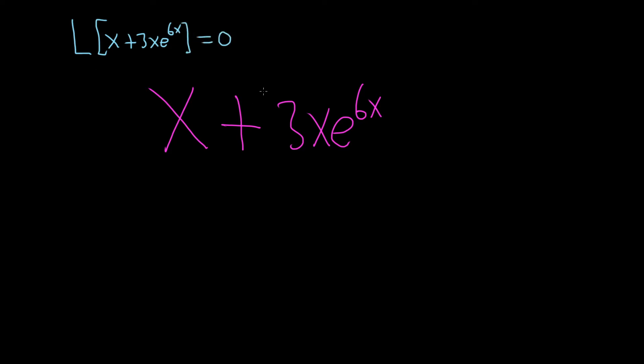So we're going to use the differential operator to help us come up with that. In general, in order to make the derivative of x equal to 0, we have to differentiate it twice. So we're going to use d squared to get rid of that.